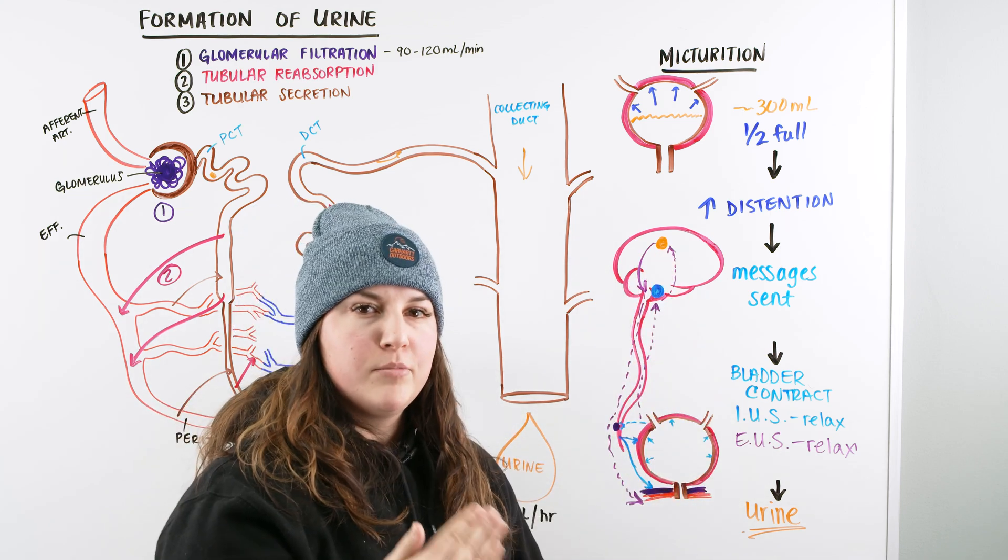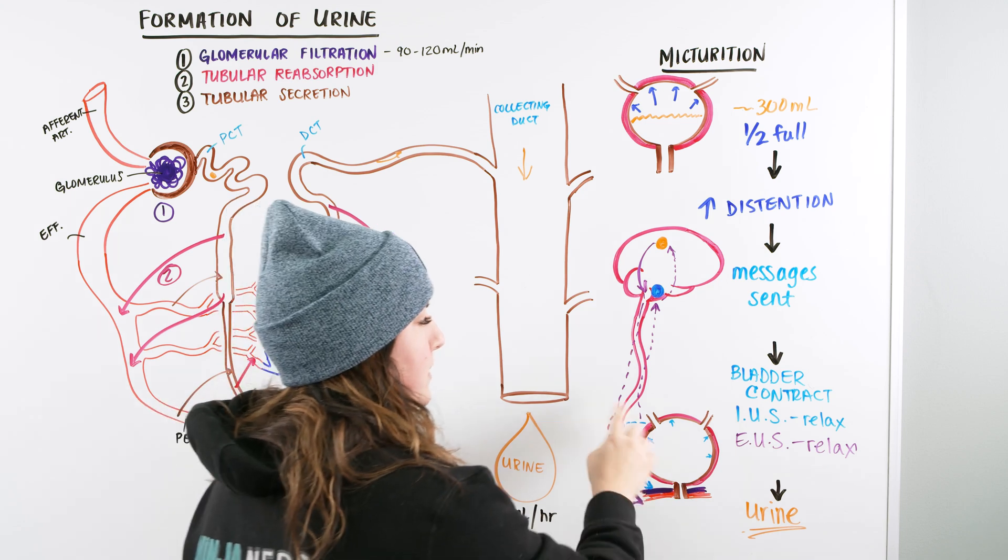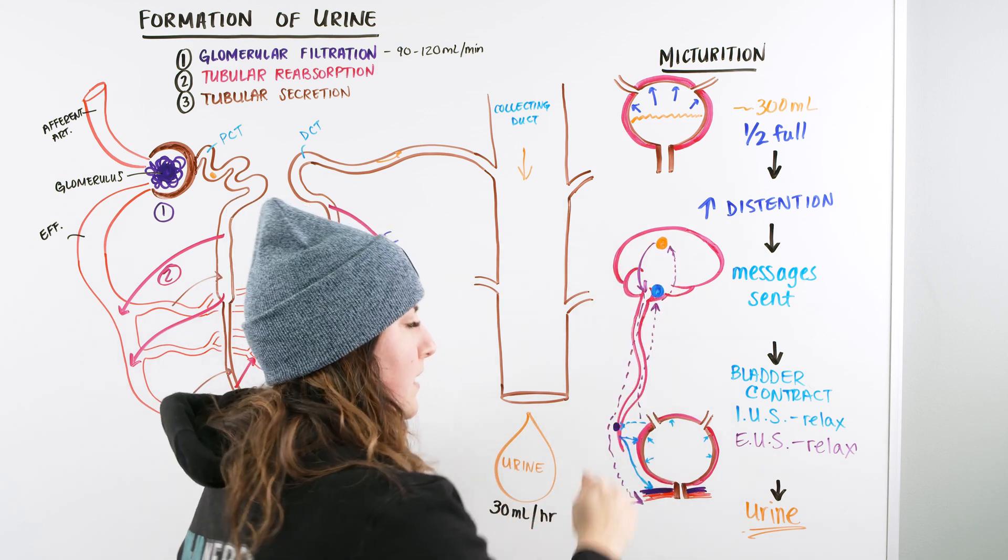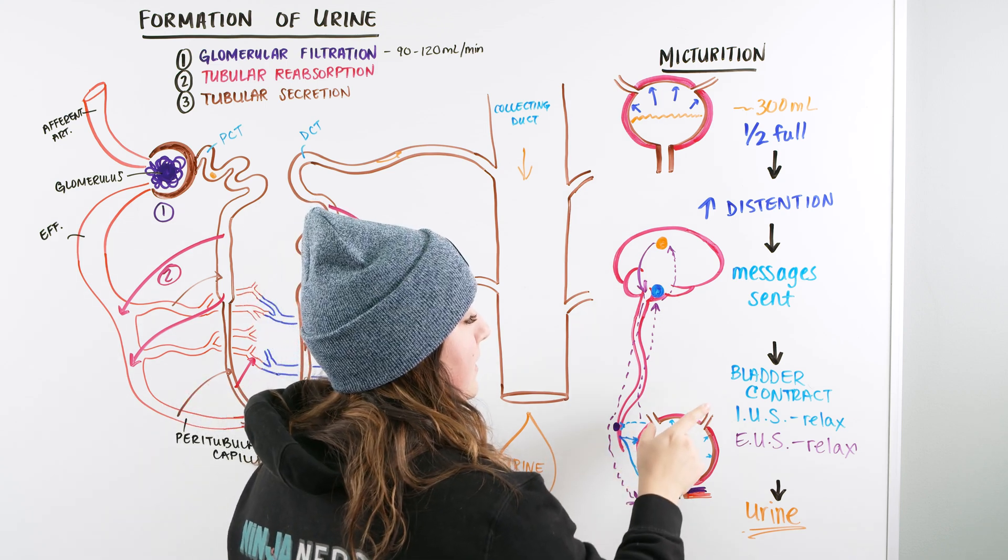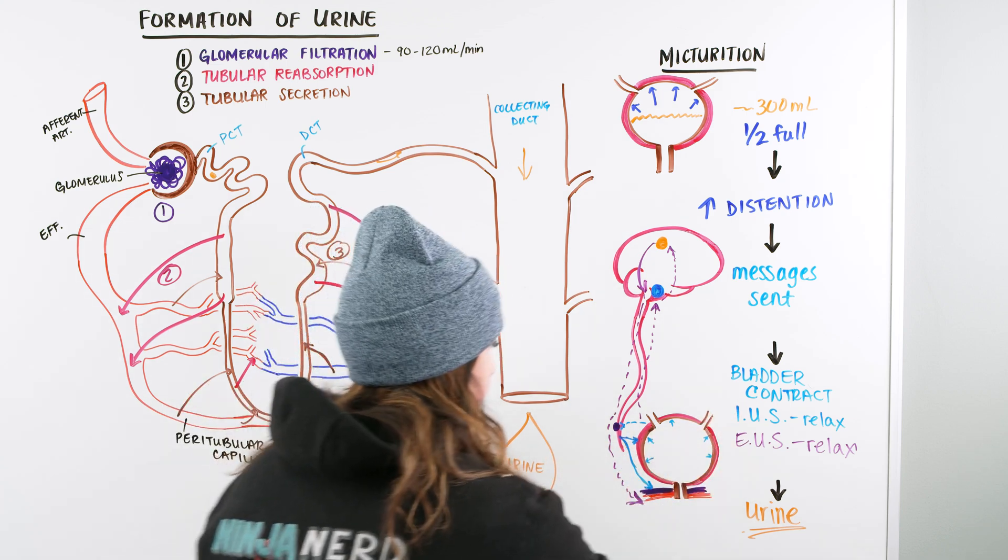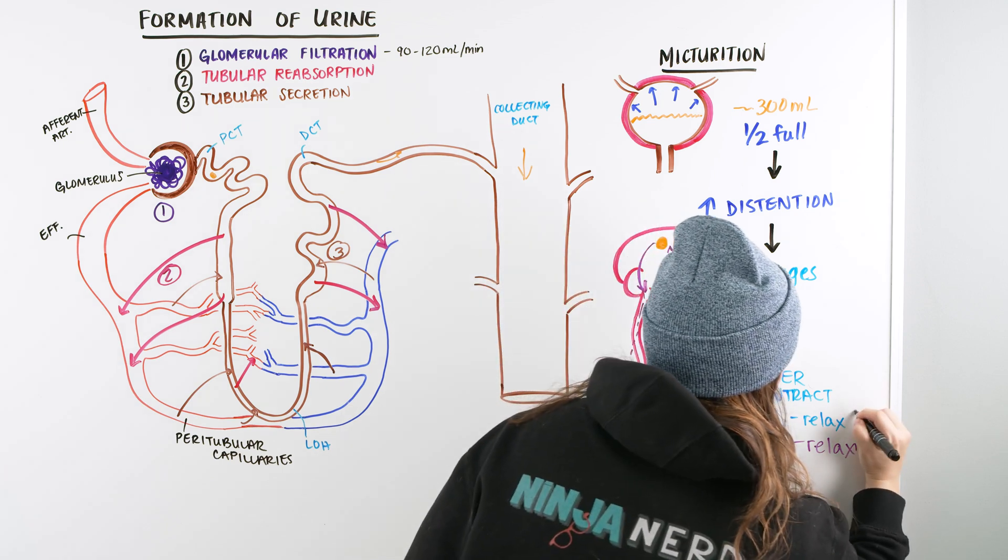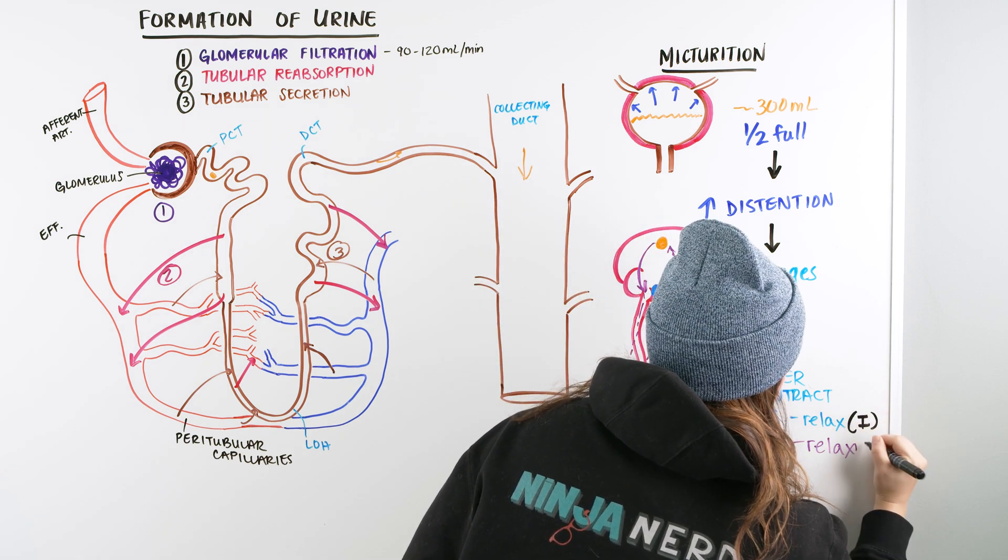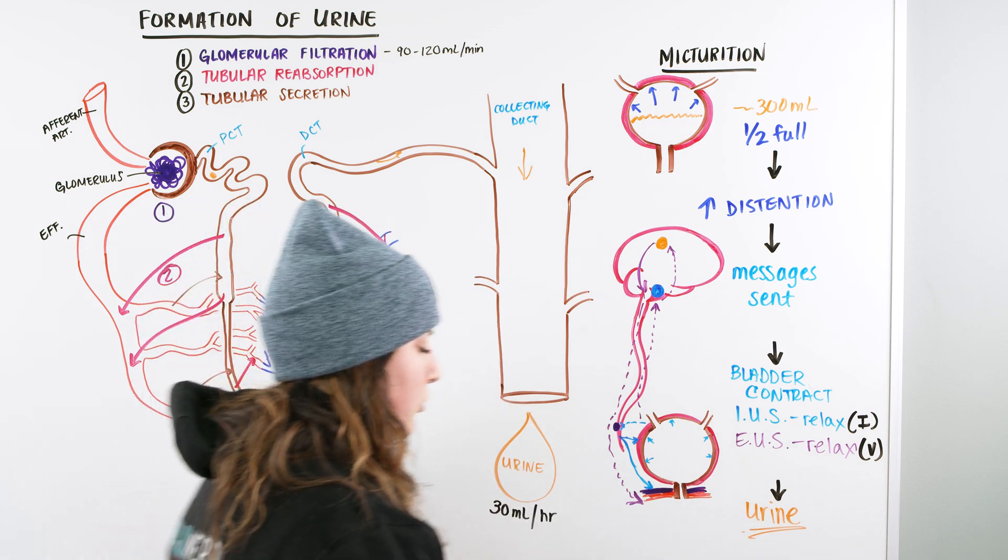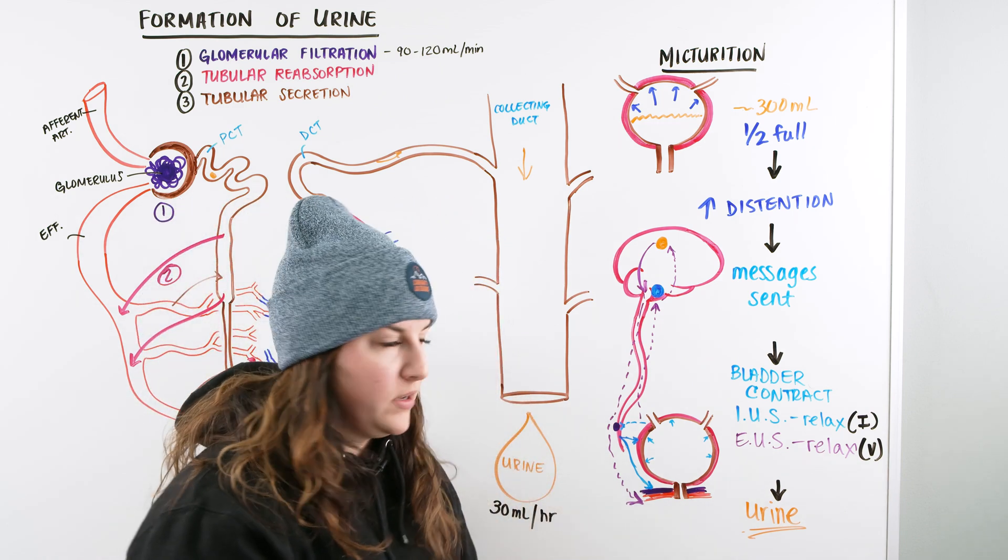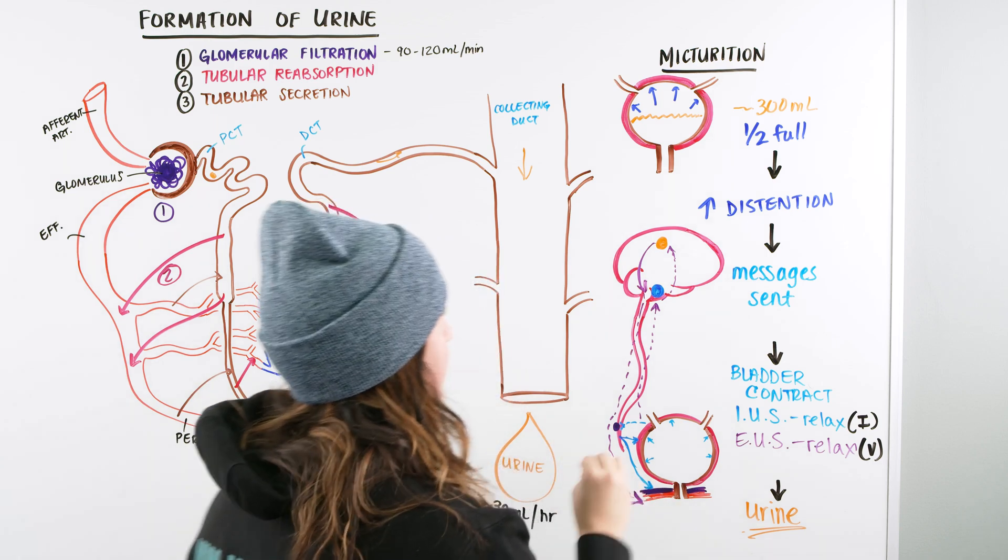is that there is a potential for a lot of different injuries along the spine up into the brain that can interrupt that signaling. So I want you to understand that there is involuntary control with our internal, and then voluntary control for our external. And that is essentially how we urinate in a very watered down, easy to digest micturition reflex.